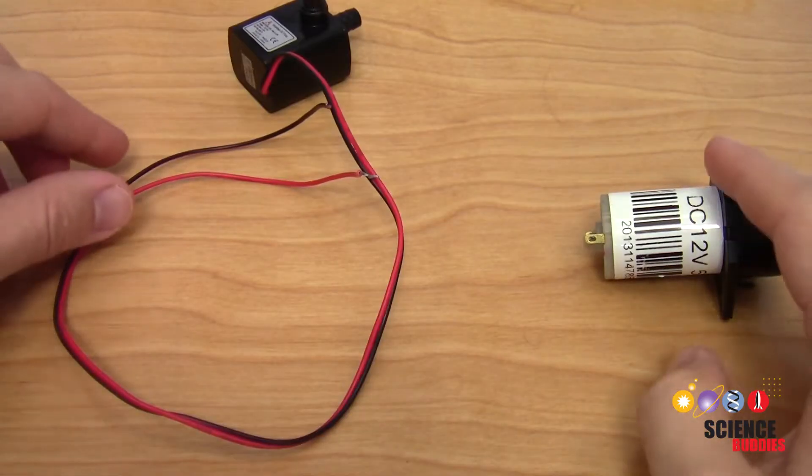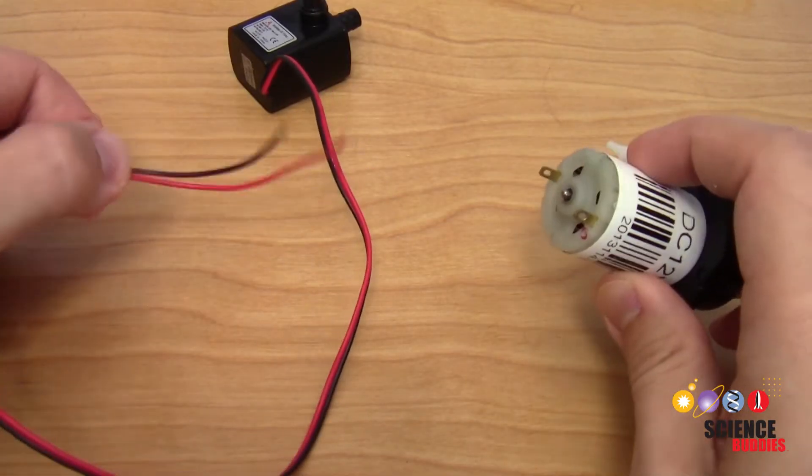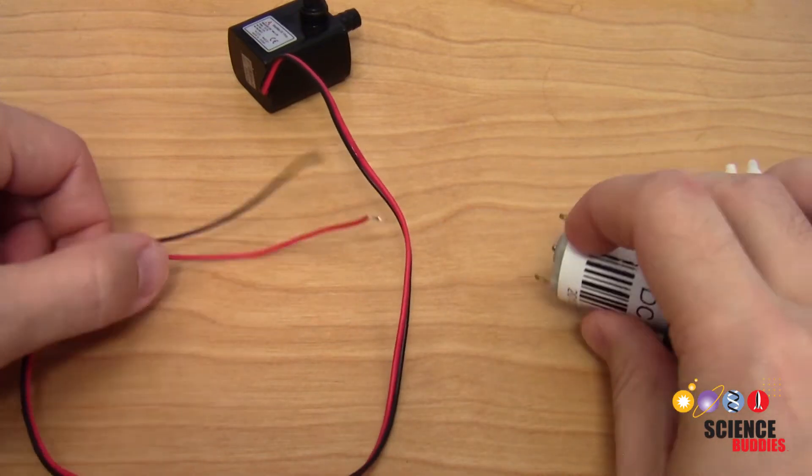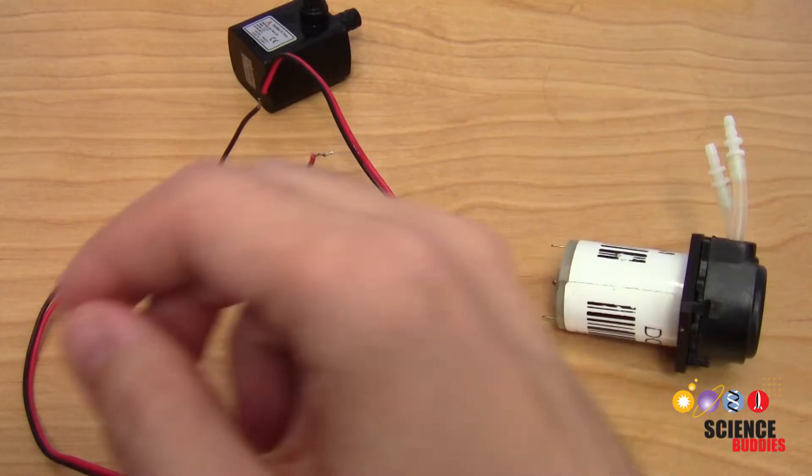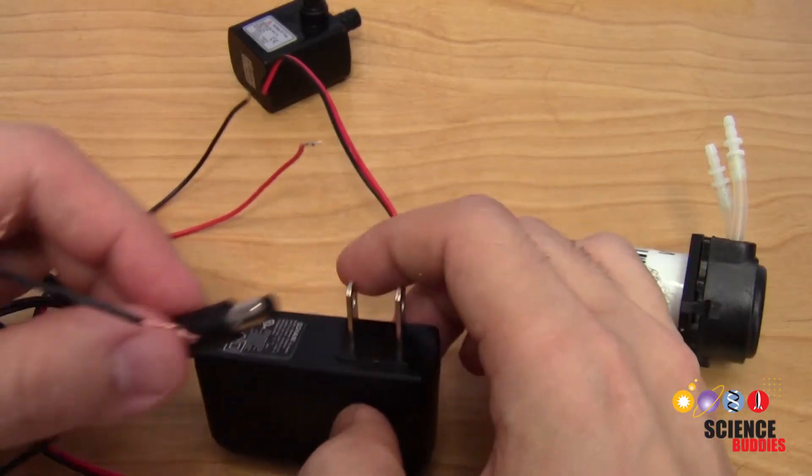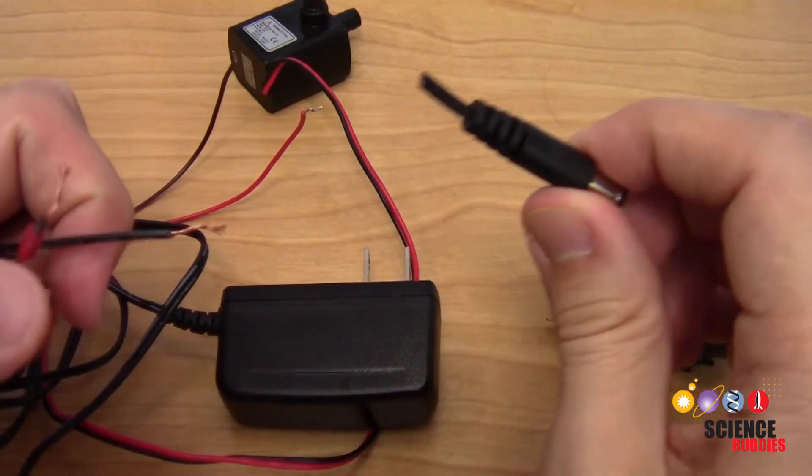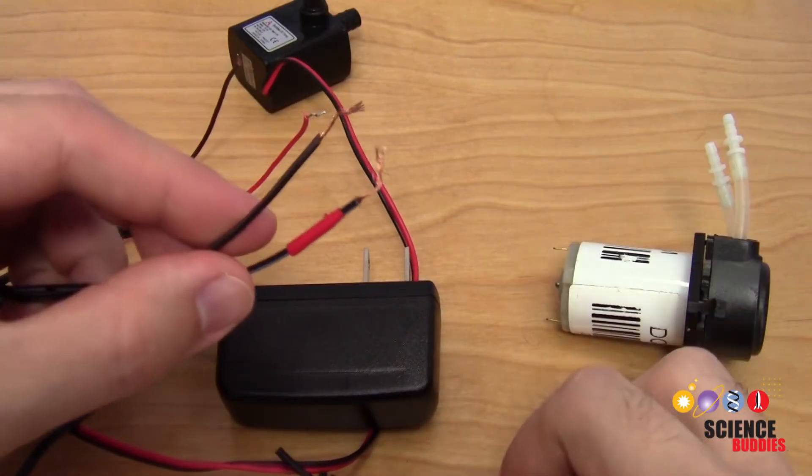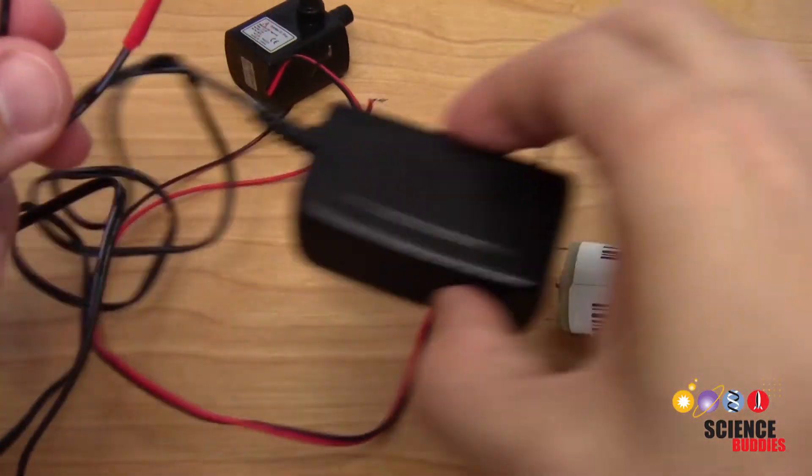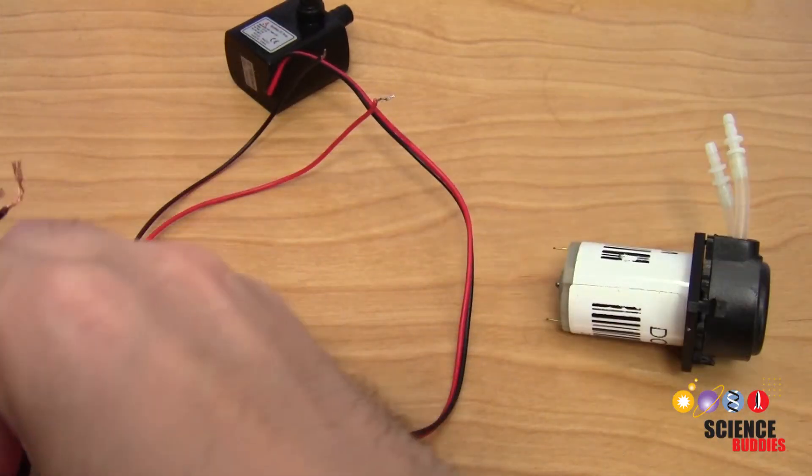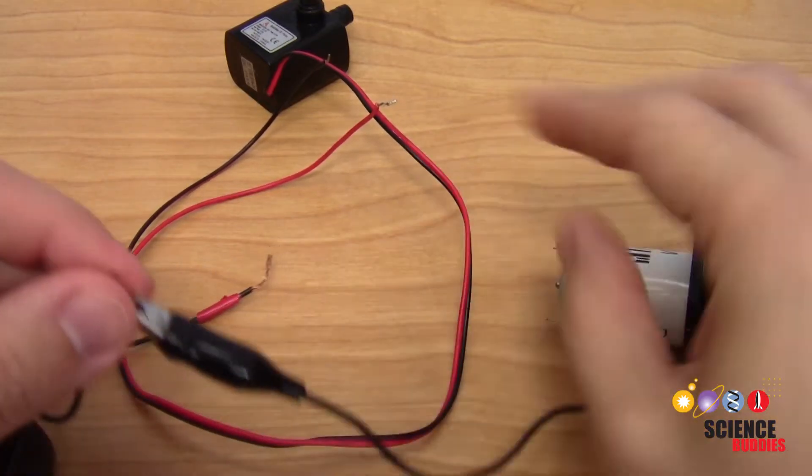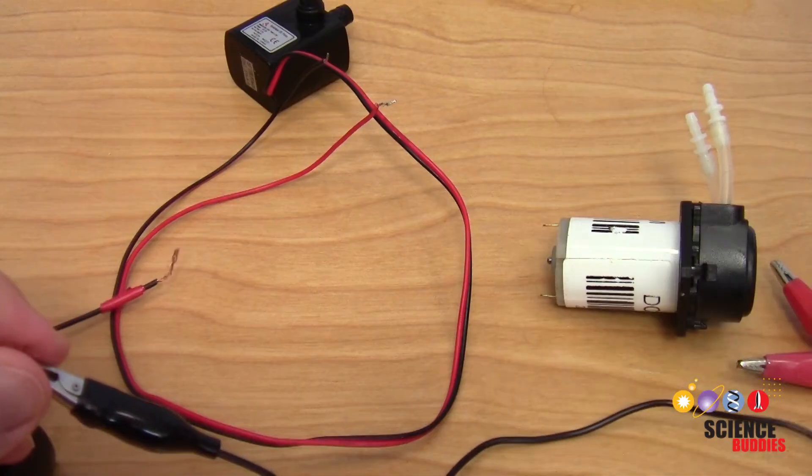You will also need to figure out how to power your pump. You will probably notice that the pump doesn't come with a plug. It just has wires or terminals on it like this. One way you can do that is to take a 12-volt wall adapter. I have taken this one and used wire strippers to cut off the barrel jack plug and then strip the insulation off of the two wires. I can then use alligator clips to connect the bare ends of these wires to either the terminals or the wires from the pump.